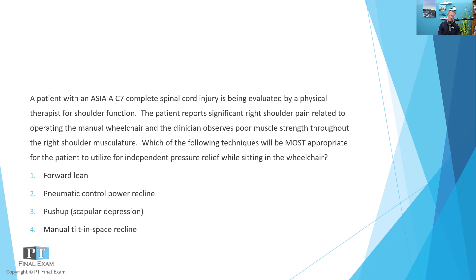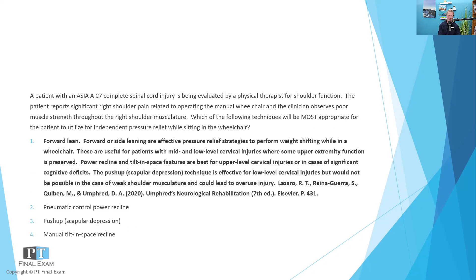This question revolves around two things: first, do you understand what function is available to a person with a C7 complete spinal cord injury? And secondarily, how do you accommodate that right shoulder pain when performing pressure relief exercises? The correct answer is option one — forward leaning. Forward or side leaning is an effective pressure relief strategy.